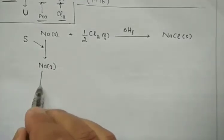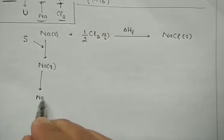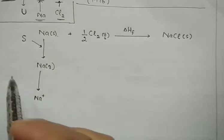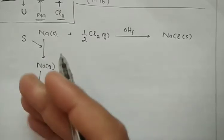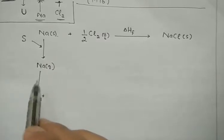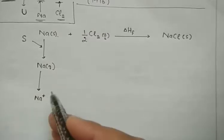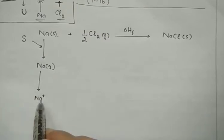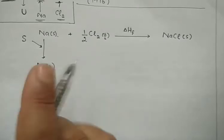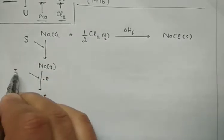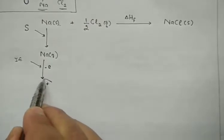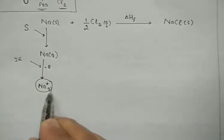Step two: sodium must be converted into sodium plus, Na⁺. Basically, we take one electron away from the outermost shell of sodium. Its atomic number is 11, and its outermost subshell is 3s with one electron. Removing that electron gives us sodium plus — its octet is complete and it attains stability. To remove this electron, energy is required — that is called the ionization energy. So now we have the cation Na⁺ available in the gas phase.